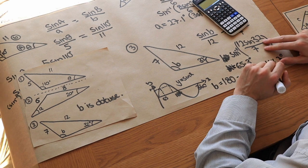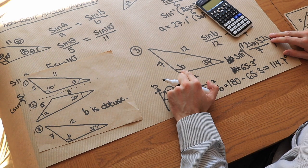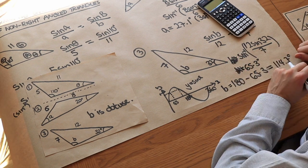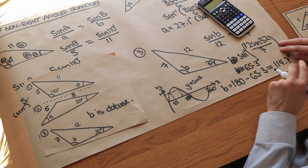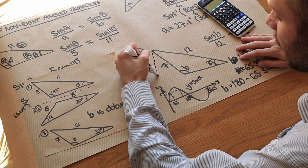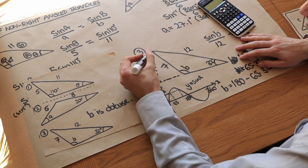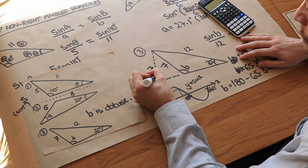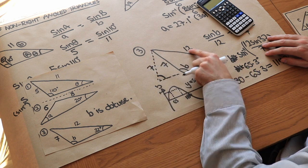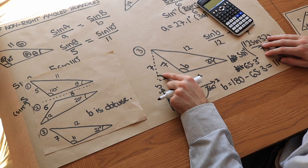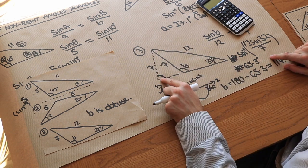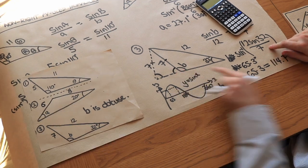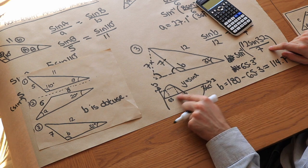This is known as the ambiguous case. Looking at the sine graph — y equals sine x — sine of 65.3 degrees and sine of a value close to 180 degrees give the same y-value. By symmetry, since we've gone 65.3 up from zero, going 65.3 down from 180 also gives a solution. So we do 180 minus 65.3, which equals 114.7 degrees — that's the actual value of B. If the angle is obtuse and you're using the sine rule, subtract your calculator result from 180.